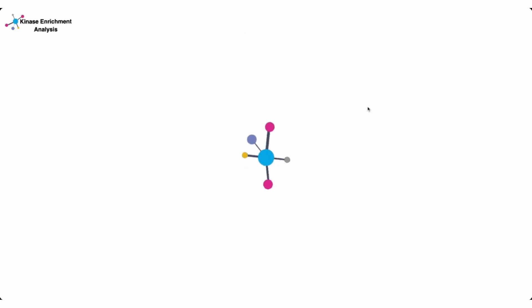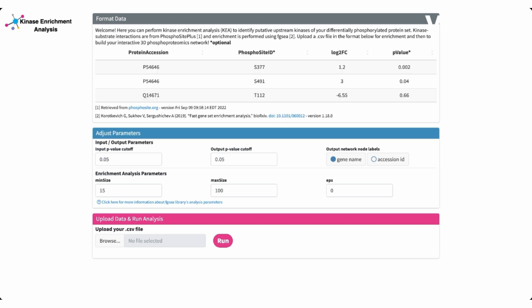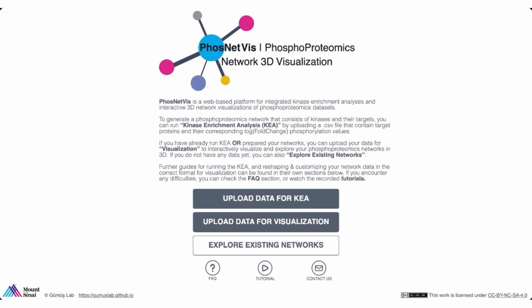So if we click on the upload data for kinase enrichment analyses, we go to the R Shiny interface, where on top there is instructions on how to format the data, where all you need is a tab-delimited text file with protein accession numbers and log twofold changes. In addition, optionally, the user can also provide phosphosite IDs and the p-values. In the next section, the user has the option to adjust input parameters for enrichment based on their needs or change gene output network node labels. And finally, here, the user inputs their tab-delimited text file, which in the format as specified above, and runs the analyses. So let's go back to the original homepage.